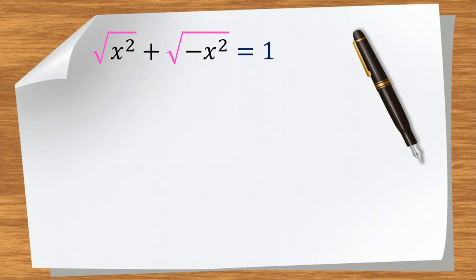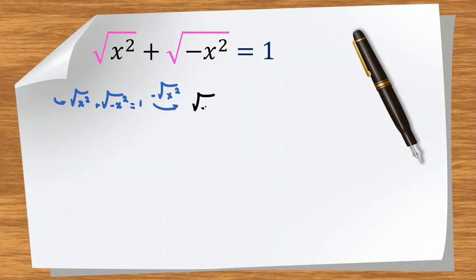We have the equation: square root of x squared plus square root of negative x squared equals 1. We want to find all possible values of x. We subtract square root of x squared from both sides, so we get square root of negative x squared equals 1 minus square root of x squared.